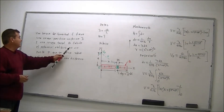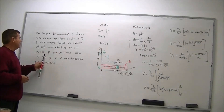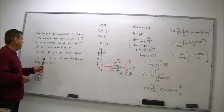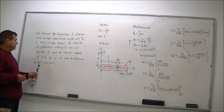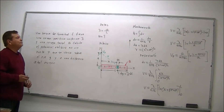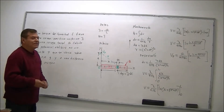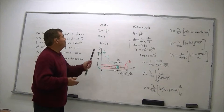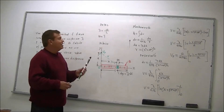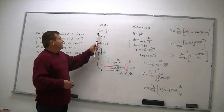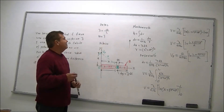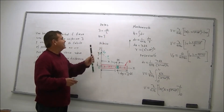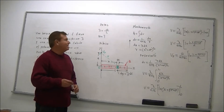Calcule el potencial eléctrico en un punto P que se ubica sobre el eje Y y a una distancia A del origen. Ese sería el enunciado. Nuestros datos nos dicen que tiene una densidad de carga lineal lambda igual a Q sobre L, y nos están pidiendo el potencial en un punto P sobre el eje Y.